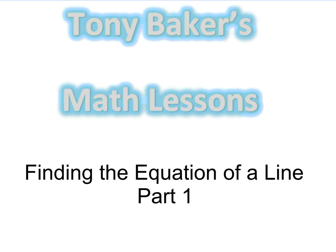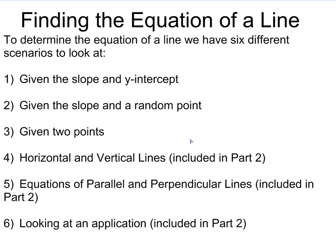This is part one of two lessons looking at finding the equation of a line. We're going to look at six different ways that we're going to do this. First one, we're going to look at giving a slope and the y-intercept, which is the easiest way. Second one is giving the slope and a random point. Third one is going to be giving two points.